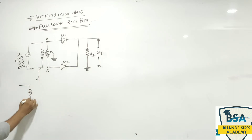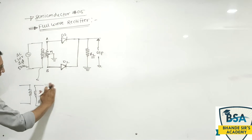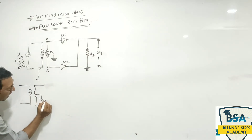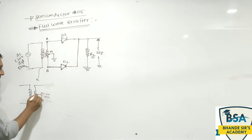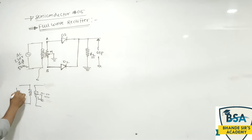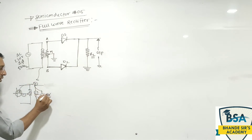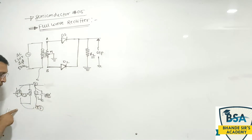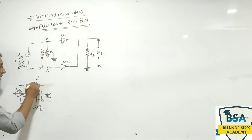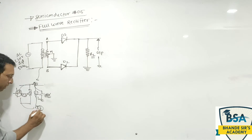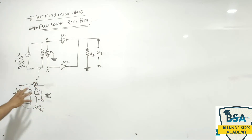Center tap transformer में secondary winding center पे tapped होती है, मतलब ground होती है। आधा हिस्सा ऊपर होता है, आधा हिस्सा नीचे होता है। In short, यदि alternating cycle दे रहे हैं — plus और minus — तो पहले positive half के लिए point A will become positive with reference to M (ground reference), and for the negative half cycle, point B will become positive with reference to M. So it alternately becomes positive and negative.